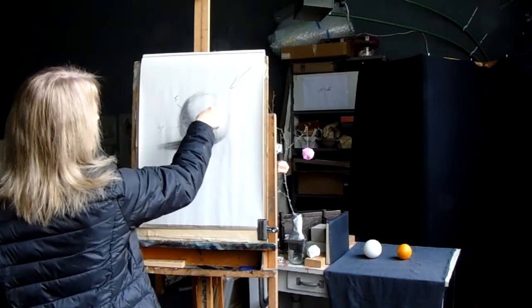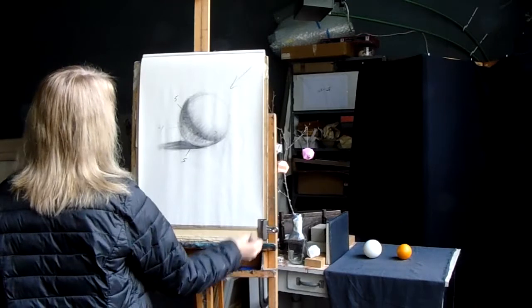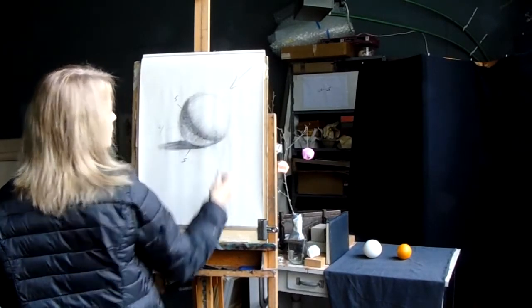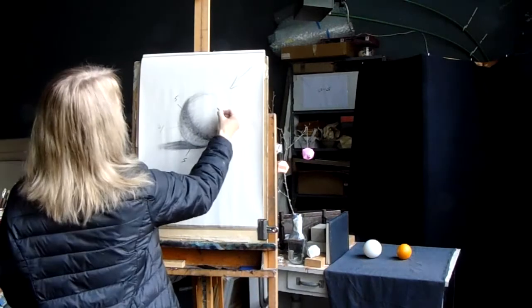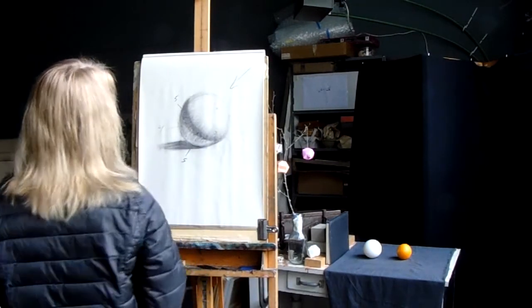This area, which is the direct illumination of my light source, that's going to be the value of the paper. Because in this case, we're using white paper. So this is going to be 0. The white paper.